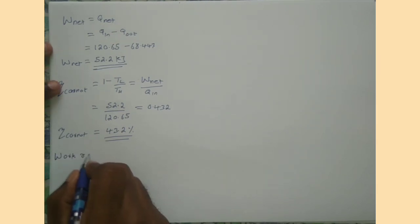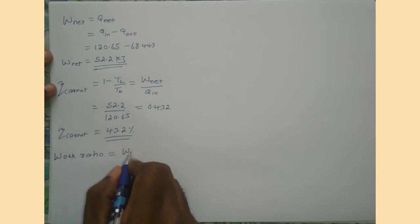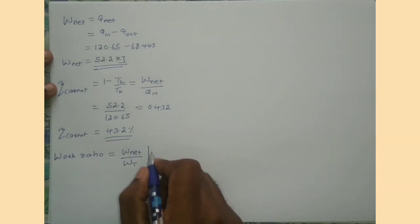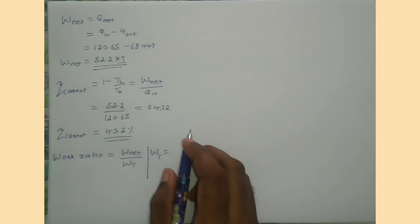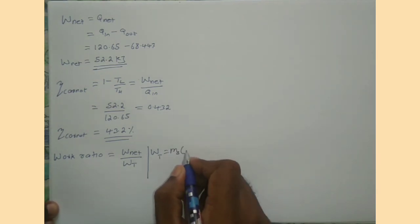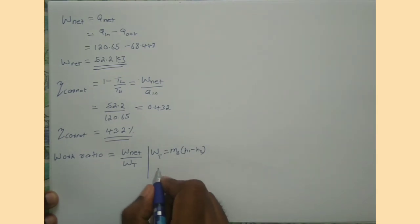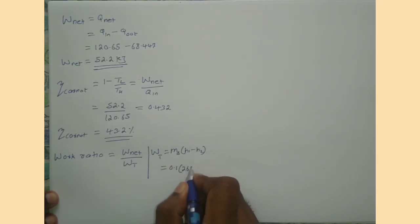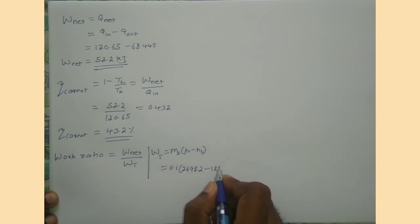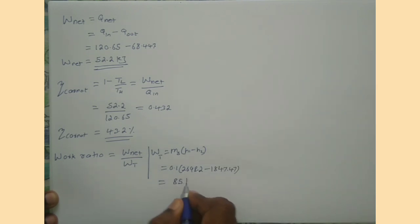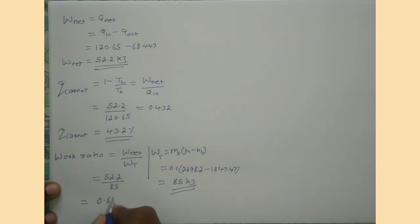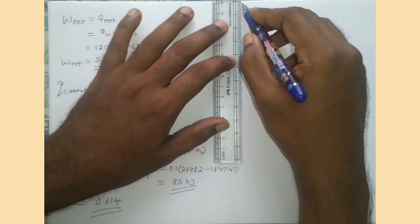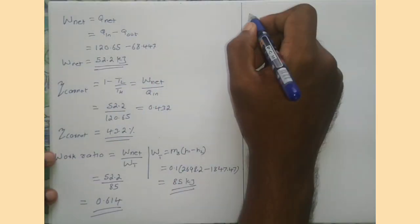Now we have to find the work ratio. The formula for work ratio is W_net divided by W_turbine. The turbine performs work in process 1 to 2, so W_turbine equals ms times (H1 minus H2). Substituting values, we get turbine work W_t equals 85 kJ. Therefore, the work ratio equals W_net / W_t equals 0.614, which means 61.4% of turbine work is available as net work.